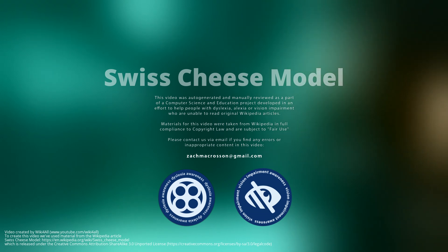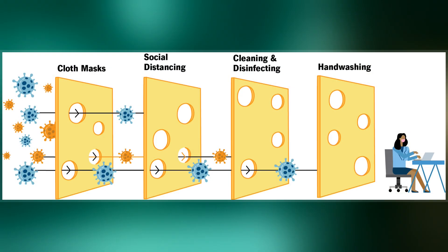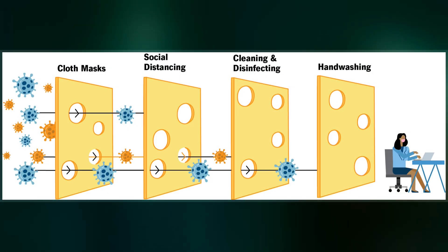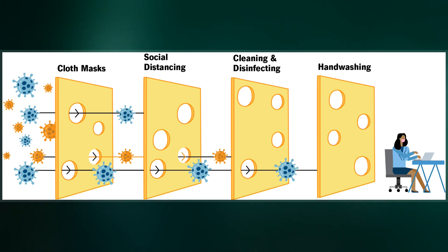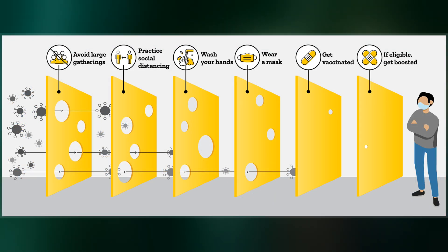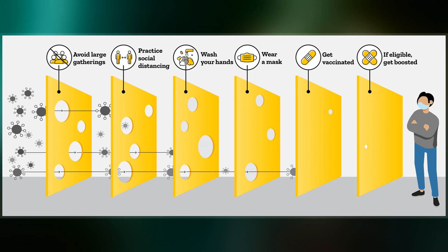The Swiss cheese model of accident causation is a model used in risk analysis and risk management, including aviation safety, engineering, healthcare, emergency service organizations, and as the principle behind layered security, as used in computer security and defense in depth.